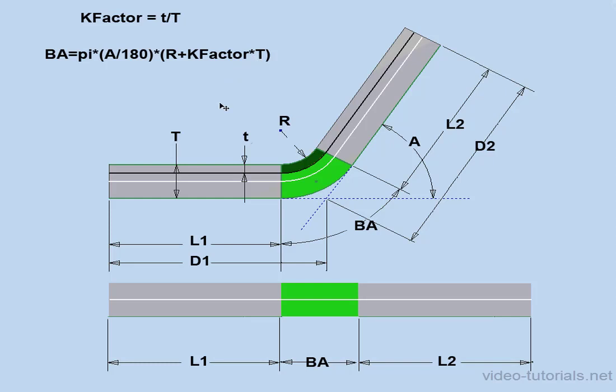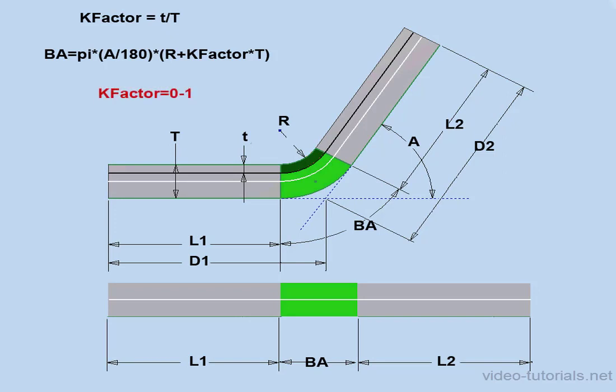In theory, the k-factor can range from anywhere between zero to one. For example, you'll find that hard materials like steel have a higher k-factor like 0.5, whereas softer materials have a lower k-factor, closer to 0.25. Copper is one example of a softer material.